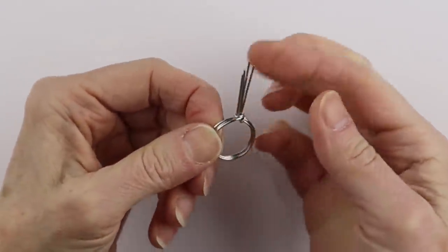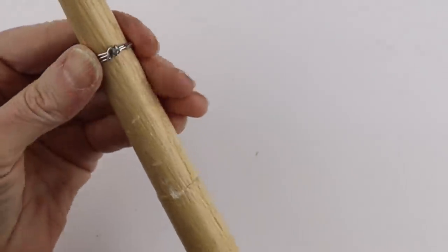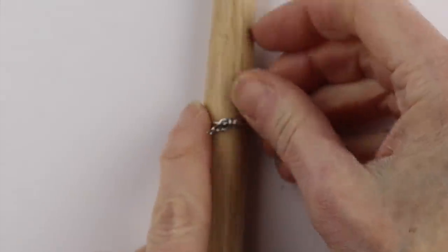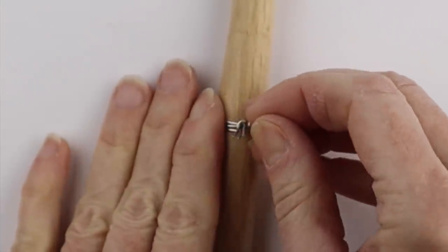So now we have three bands and five wires sticking up. Put it back on the ring mandrel. At this point we're going to spread these wires out so we're going to bring that one there.